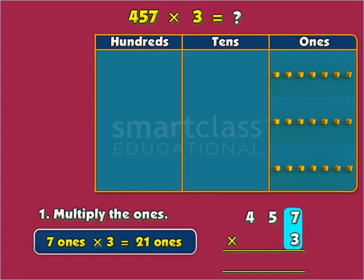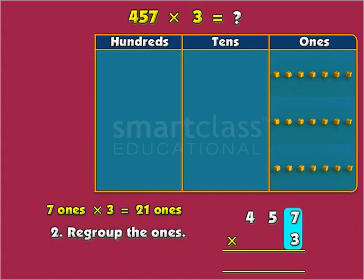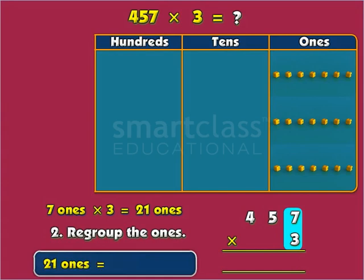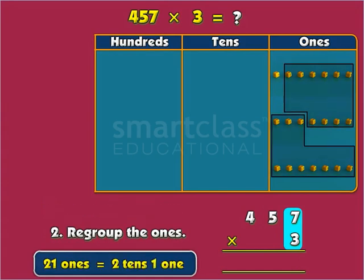21 is a two-digit number, so we need to regroup. 21 equals 2 tens, 1 one. Leave the 1 in the ones column and move 2 tens to the tens column.